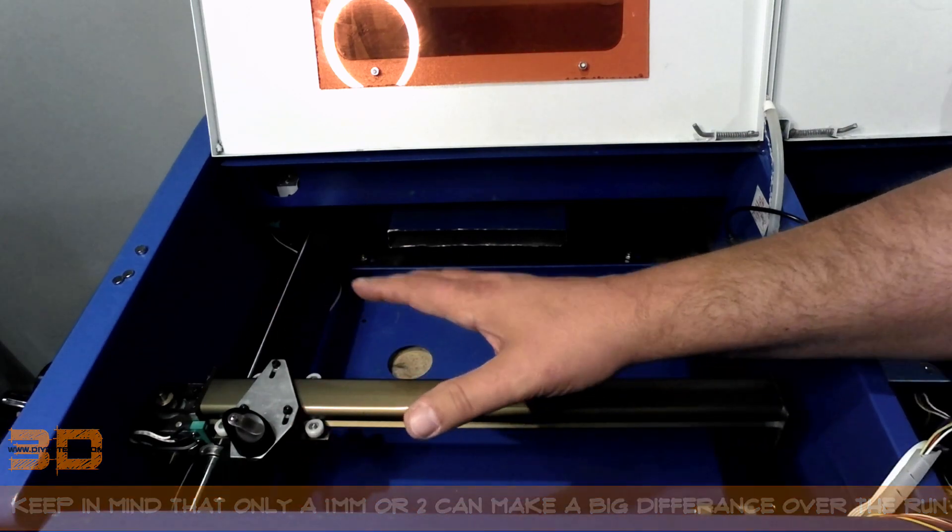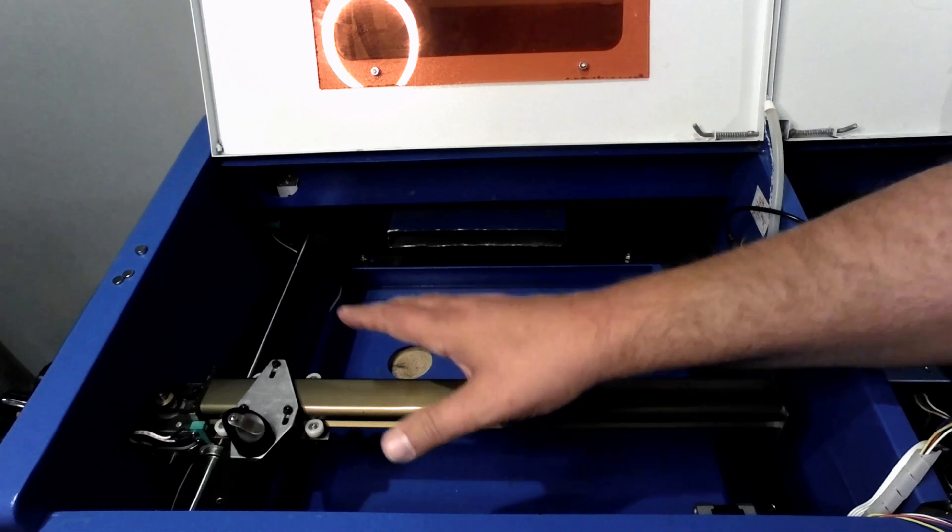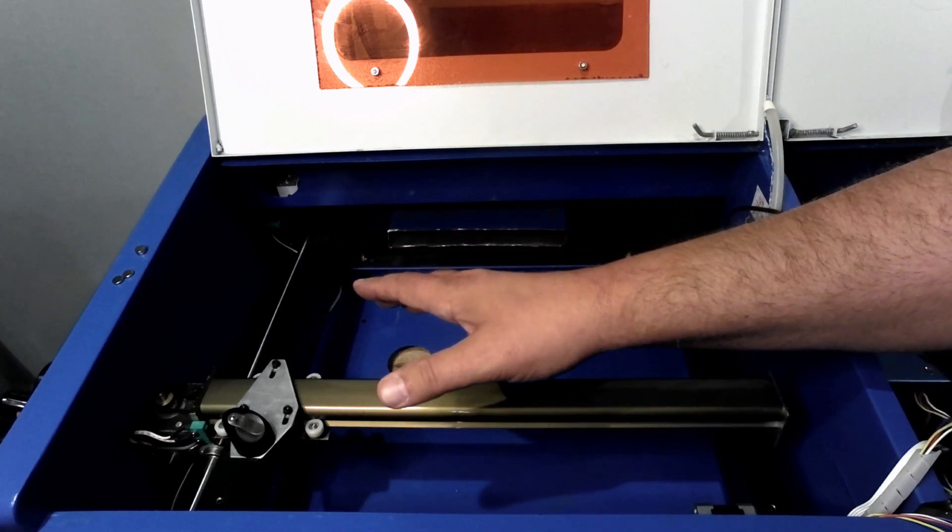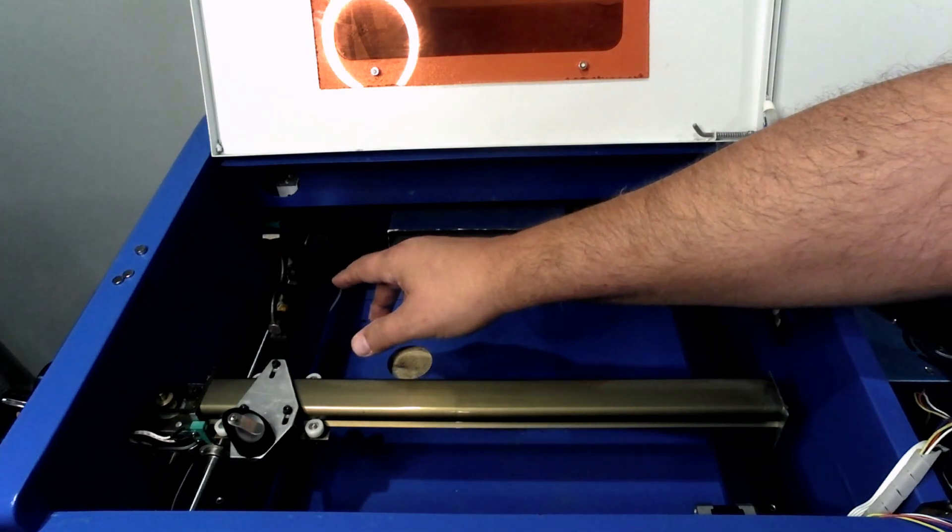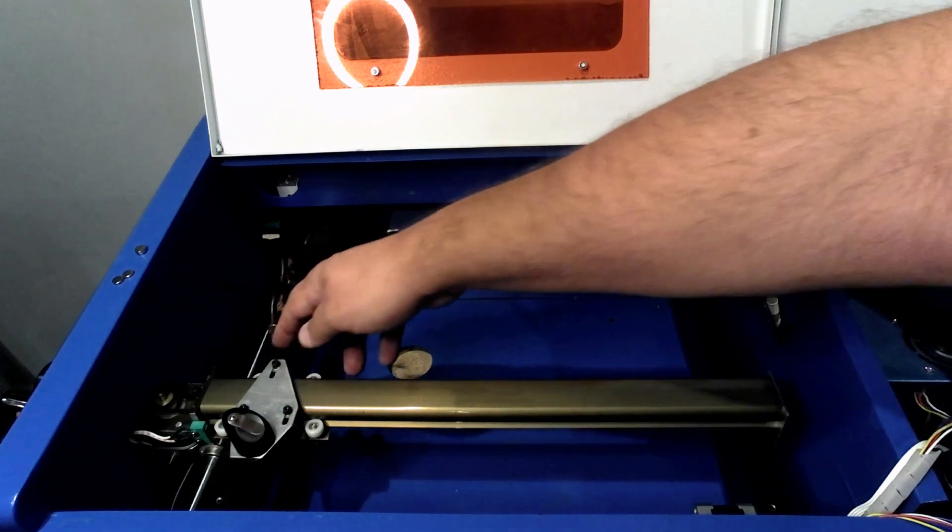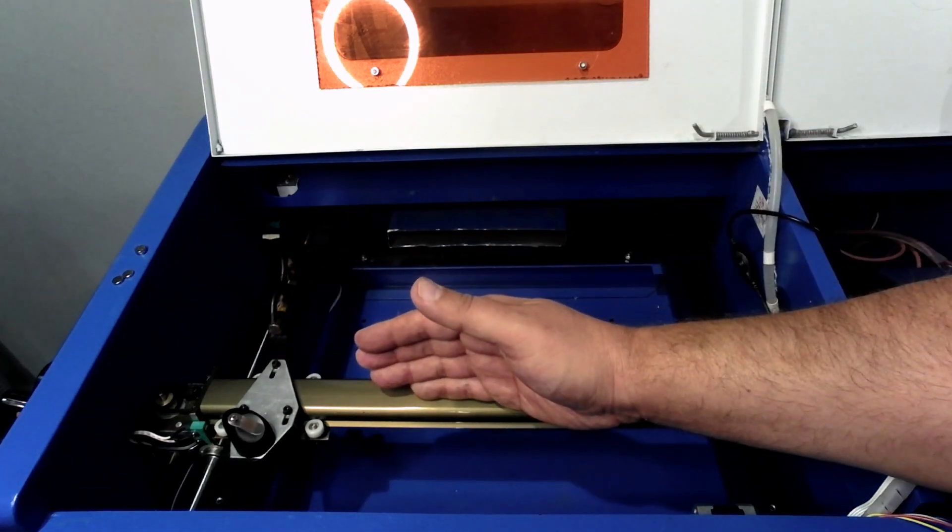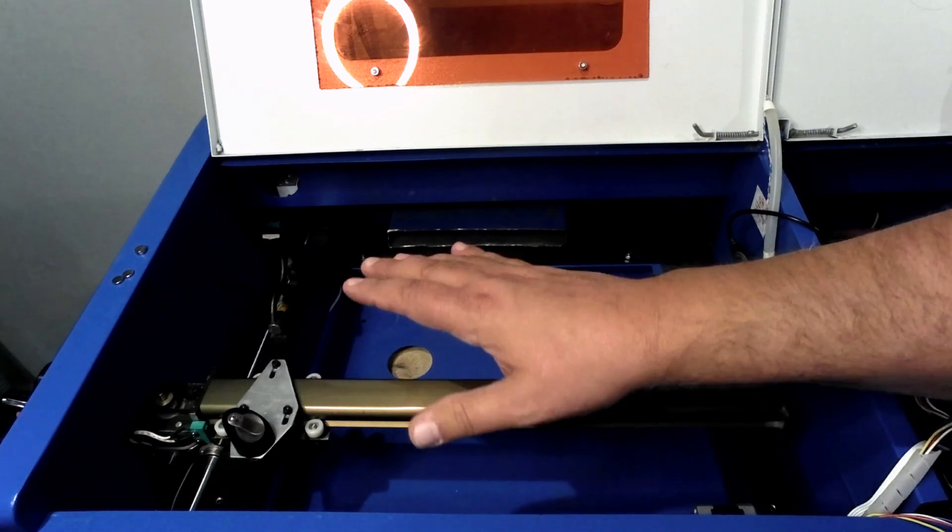You may or may not have to do that depending on the quality of yours. If I put a machinist level on here it comes out square. You want to check both rails to make sure that they are level.